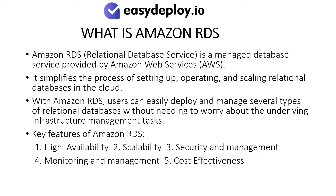What is Amazon RDS? Amazon RDS is a managed database service provided by Amazon Web Services. It simplifies the process of setting up, operating, and scaling relational databases in the cloud. With Amazon RDS, users can easily deploy and manage several types of relational databases without needing to worry about the underlying infrastructure. Key features of Amazon RDS: High availability, Scalability, Security and management, Monitoring and management, and Cost effectiveness.